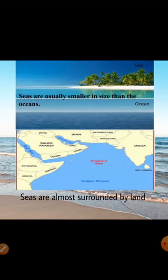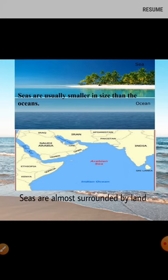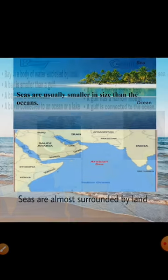The first one is sea. Seas are usually smaller in size than the oceans — oceans are bigger whereas seas are smaller. Seas are almost surrounded by land, and the Arabian Sea is one example.